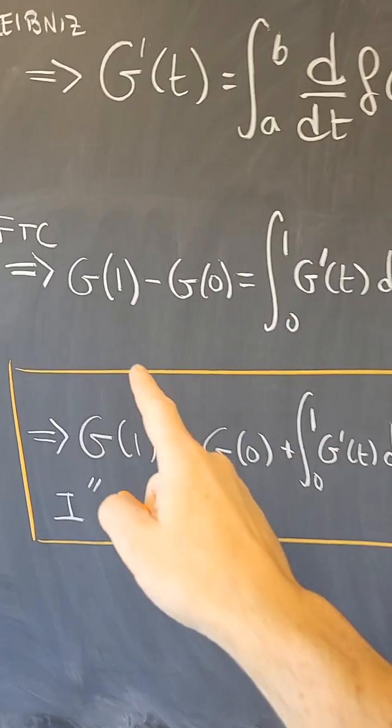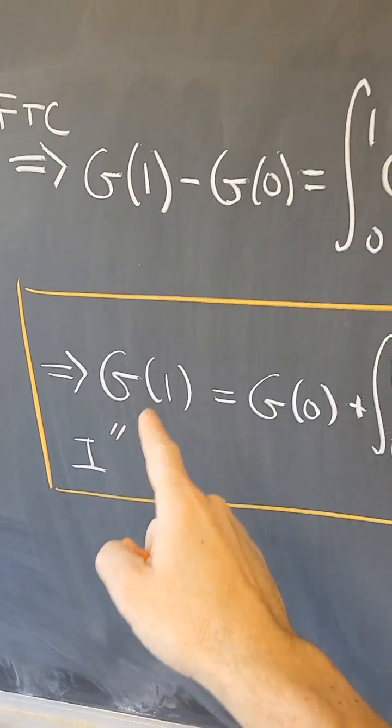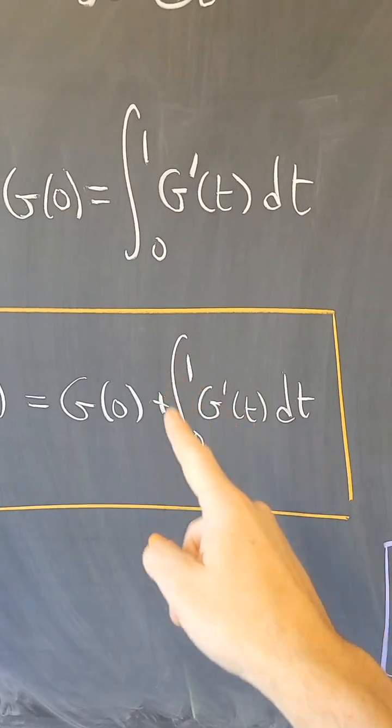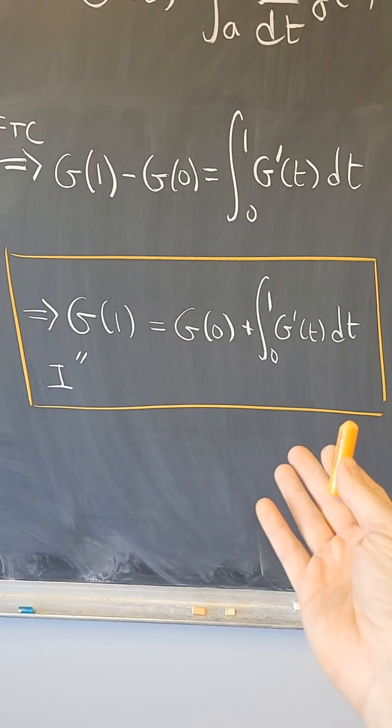And therefore, since g of 1 was i, what I wanted to compute, then i will be g of 0 plus that integral that hopefully is easy to compute. So this is Feynman's trick.